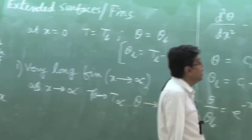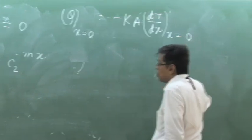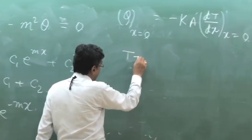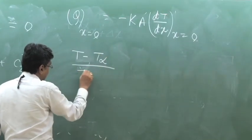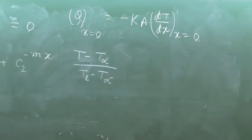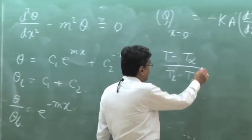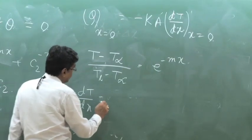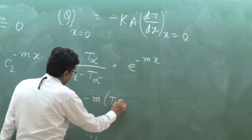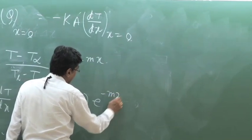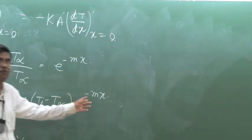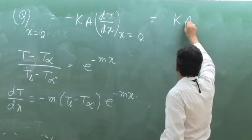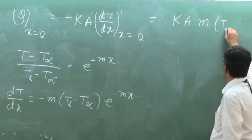So it is minus k A times dT/dx at x equal to 0. What is dT/dx at x equal to 0? Writing theta/theta_b as (T minus T_infinity)/(T_b minus T_infinity) equals e to the power minus mx, it is simple that dT/dx equals minus m times (T_b minus T_infinity) times e to the power minus mx. At x equal to 0, the exponential function is 1, so q becomes plus k A m times (T_b minus T_infinity).